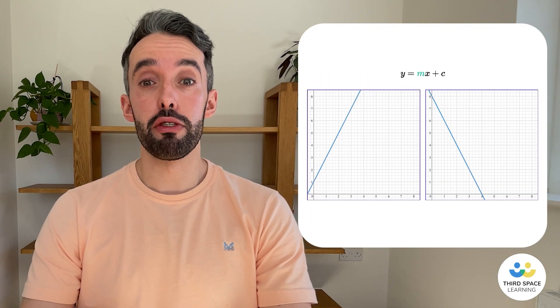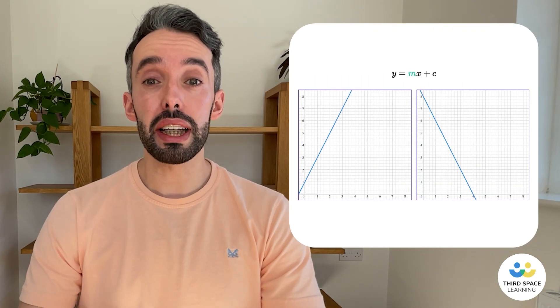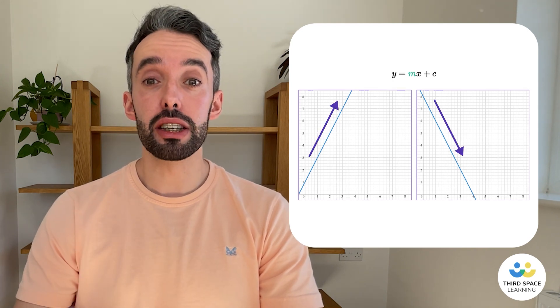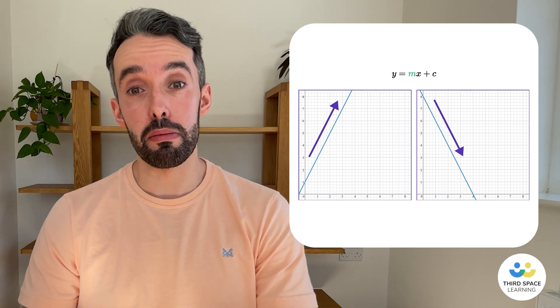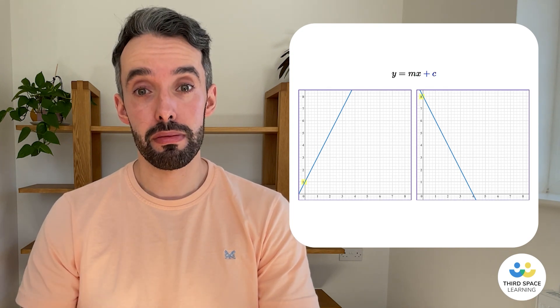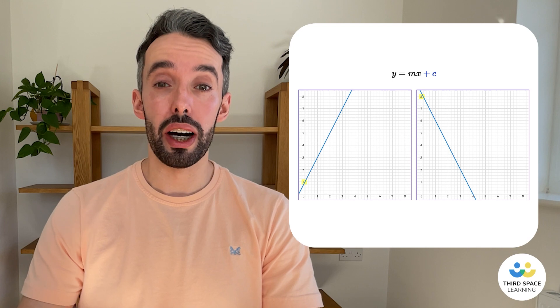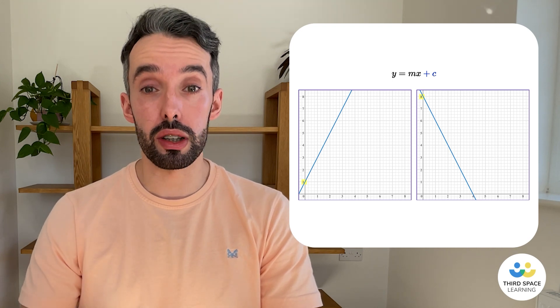Straight-line graphs are a visual representation of a linear function. They have the form y equals mx plus c. m is the gradient of the line. It tells us how the graph changes over time, its steepness. And c is the y-intercept, which is where it crosses the y-axis.